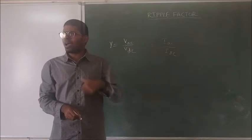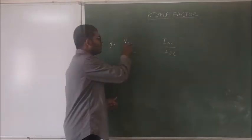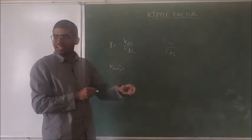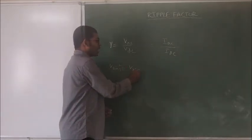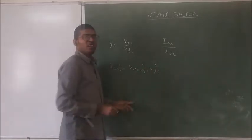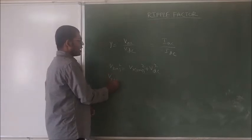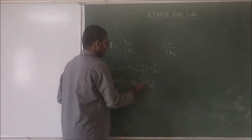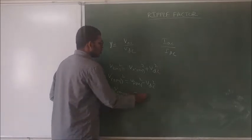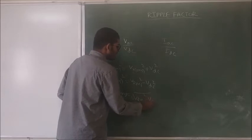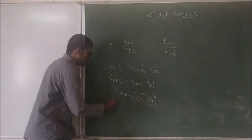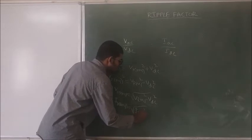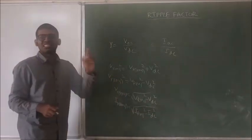We already know the DC value, but we have not calculated the AC value particularly. This AC value is nothing but the ripple RMS value. We know the RMS value: V_RMS squared can be written as the ripple RMS squared plus the average value VDC squared. So V_R_RMS squared equals V_RMS squared minus VDC squared. Similarly, I_R_RMS equals the square root of (I_RMS squared minus I_DC squared).